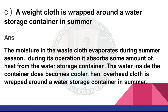A wet cloth is wrapped around the water storage container in summer. The moisture of the wet cloth evaporates during summer season. During its evaporation it absorbs some amount of heat from the water storage container, and the water inside the container becomes cooler. Hence a wet cloth is wrapped around the water storage container in summer.